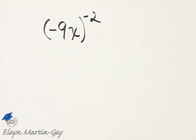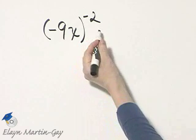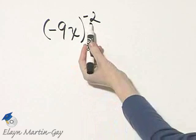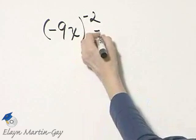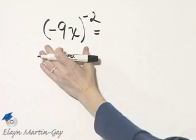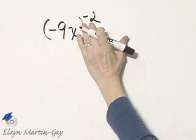Let's simplify this expression and write it with positive exponents only. If you'd like, you can use your definition of a negative exponent first and write this as 1 over this quantity to a power of 2.